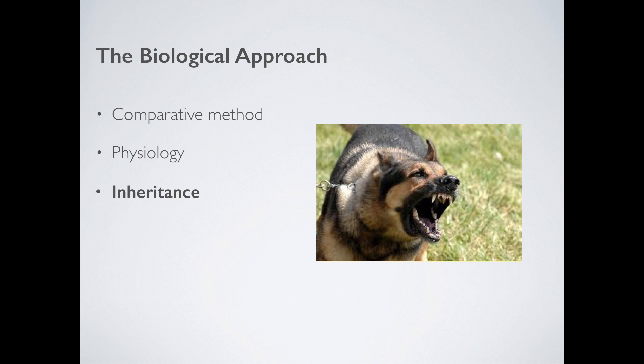Finally, inheritance — this means what genes an animal inherits from its parents. Charles Darwin himself was very much into the inheritance of behaviour. For example, we know that in certain dog breeds behaviour is very much inherited: certain dog breeds are very aggressive and certain breeds, not so much. That is very much enshrined in their genetics. But does the same thing happen in humans? Are people aggressive because their parents were aggressive? Are children intelligent because their parents had genes for intelligence? Maybe, maybe not.